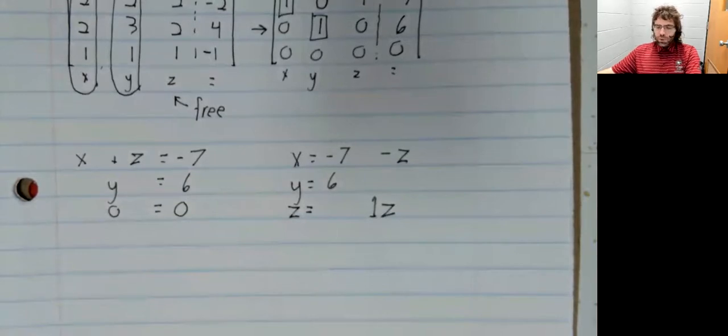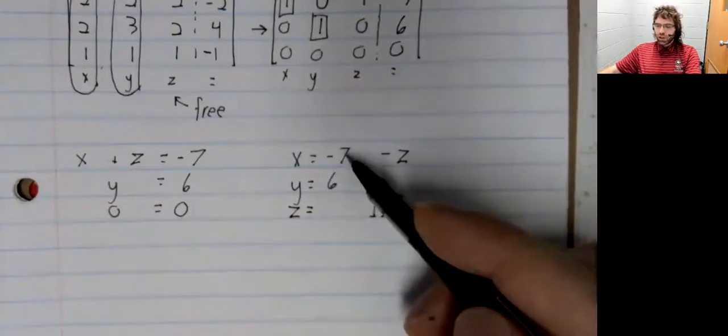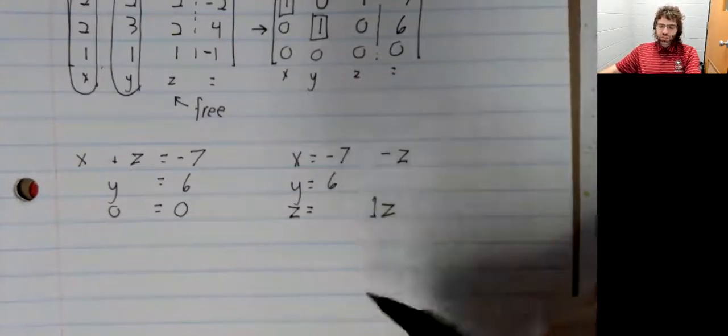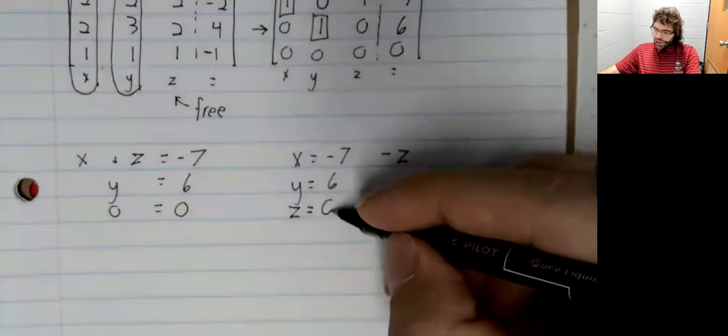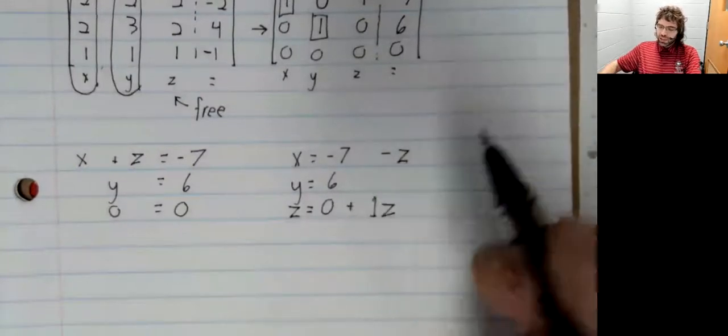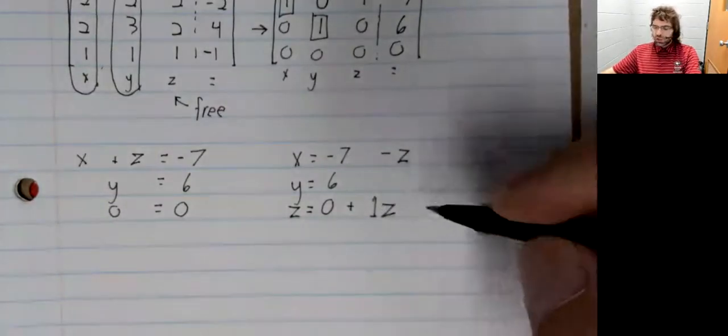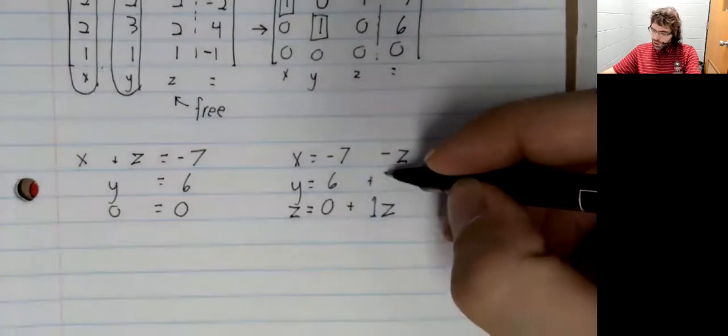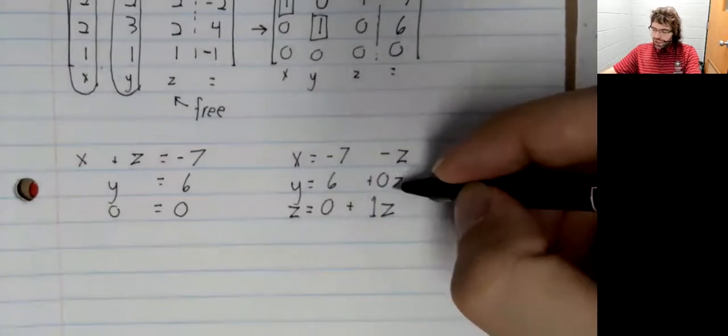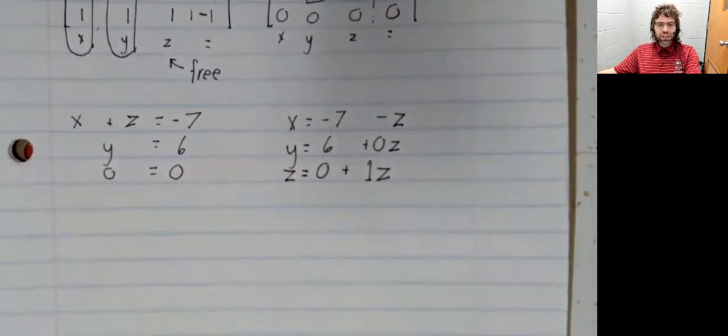And now we're going to buffer this with zeroes. So we have a constant, a constant. We don't have a constant here, but we can write in zero. We have a z term, a z term. We don't have a z term here, but we can write one in.